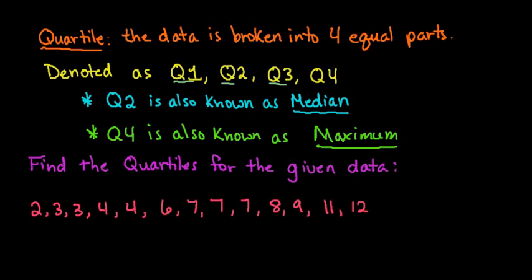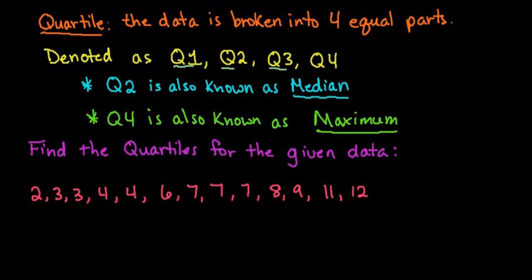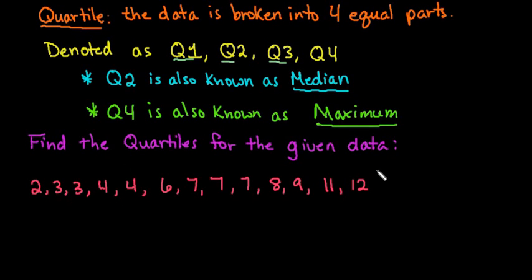For this one, we're just going to talk about how we would find the quartile of this given data set. We have 13 points. So we would start by breaking it in half. Basically, we would want to find Q2 first, which is just the median. Since we have 13 points, we would find the very middle point.